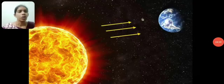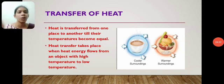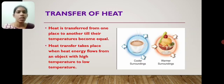Now you understand the transfer of heat. There are three types: conduction, convection, and radiation. Transfer of heat. Heat is transferred from one place to another till their temperature becomes equal. Heat transfer takes place when heat energy flows from an object with high temperature to low temperature.